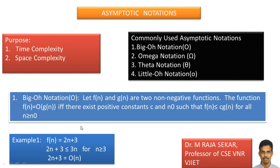Let me consider f of n equal to 2n plus 3. We can write 2n plus 3 less than or equal to 3n, since n dominates the constant 3, so instead of 2n I write 3n. Checking with trial and error: for n equal to 1, left side is 5 and right side is 3 — not true. For n equal to 2, left side is 7 and right side is 6 — not true. For n equal to 3, left side is 9 and right side is 9 — it holds. This inequality holds for all n greater than or equal to 3.